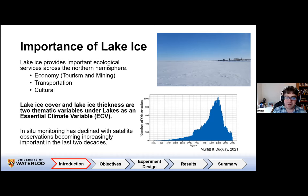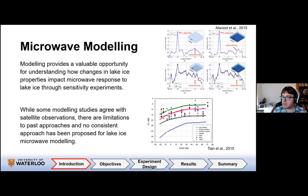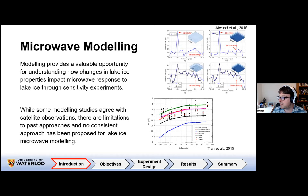However, in-situ monitoring of lake ice has declined, with satellite observations becoming increasingly important over the last two decades. In regards to understanding lake ice, and particularly its interaction with active microwave, modeling through numerical or radiative transfer models provides a valuable opportunity for understanding how changes in lake ice properties impact microwave response through sensitivity experiments. This has become even more important with changes in our understanding of scattering mechanisms for lake ice.